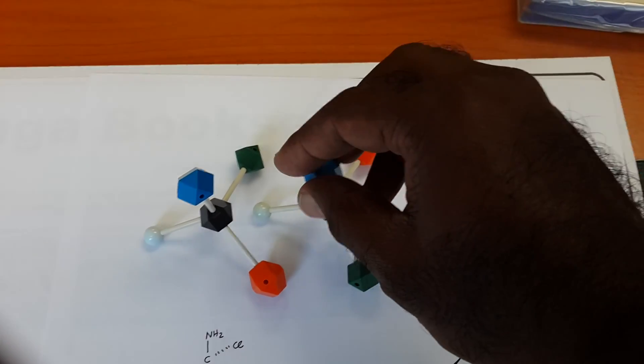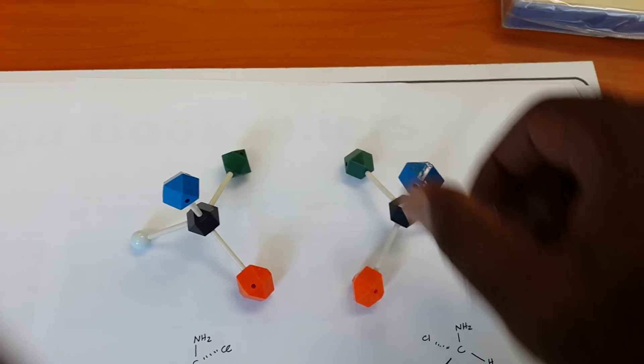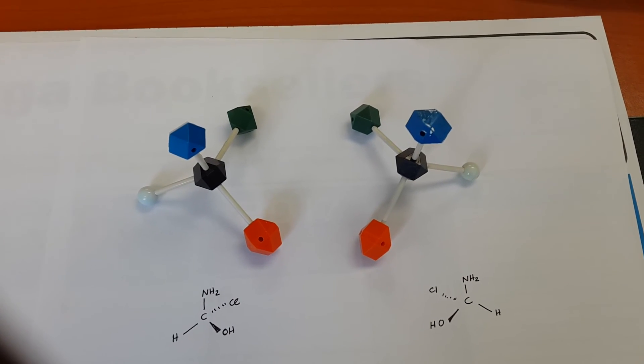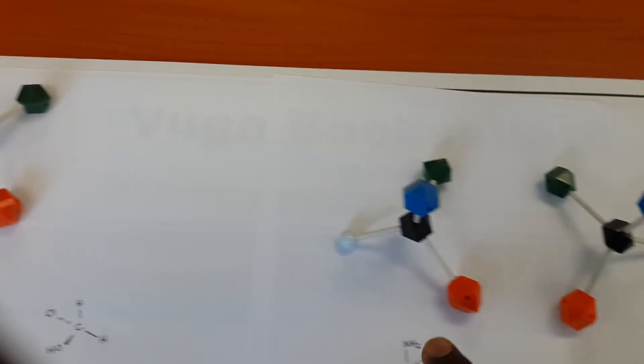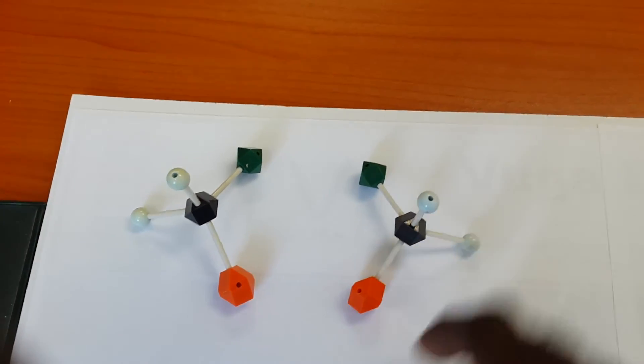So these two molecules are non-superimposable on each other. They are two different molecules, and that is an explanation of what chirality is. These two molecules are chiral, and these two molecules are not.